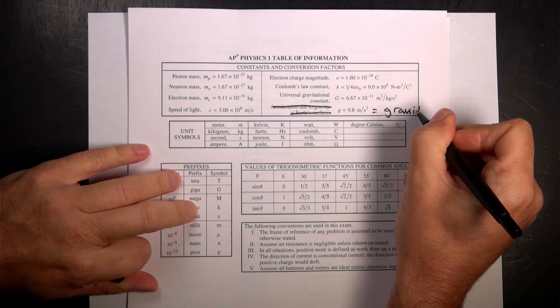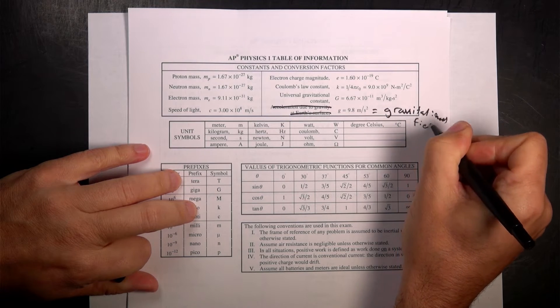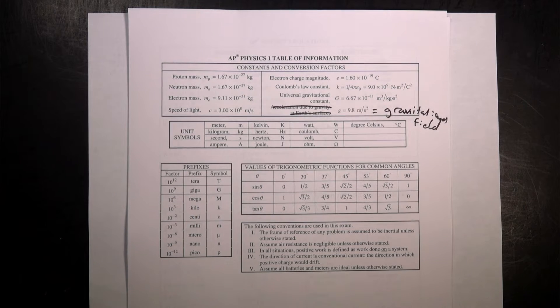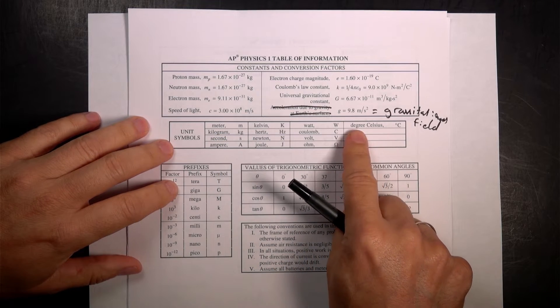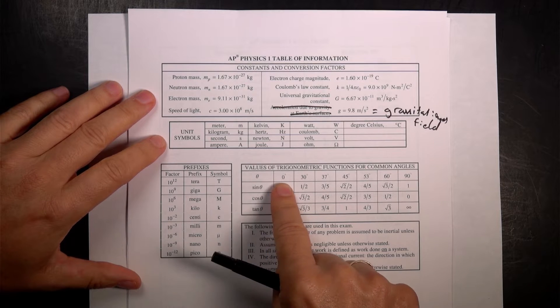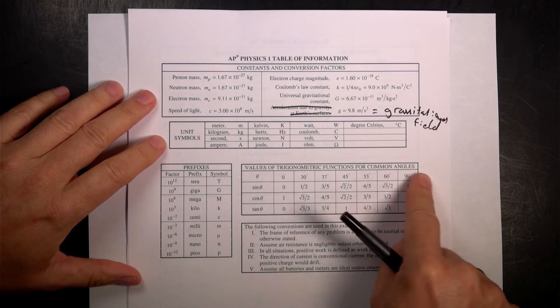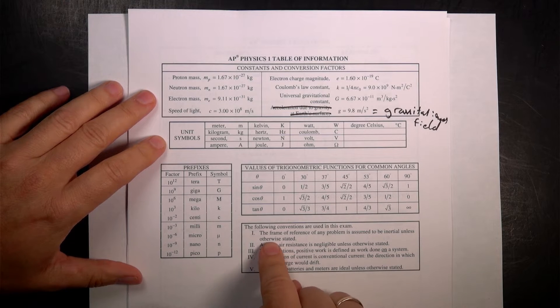That's just me. You do this stuff for long enough and you have your own certain way of doing things. And that's what I would do. Then they give you units, symbols, degrees. That's just weird. Prefixes, okay, that's cool. This is a nice value. A little trig table there. Then the assumptions.